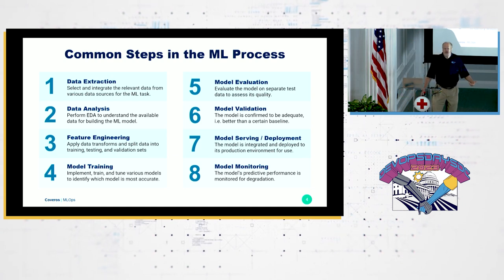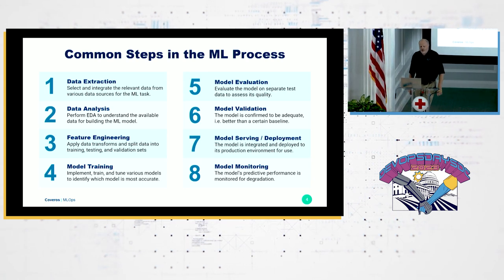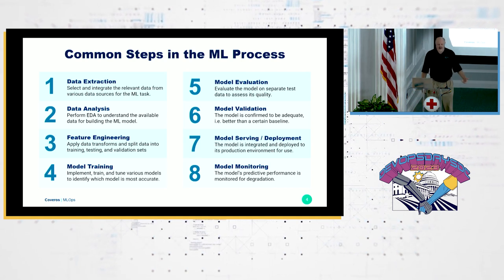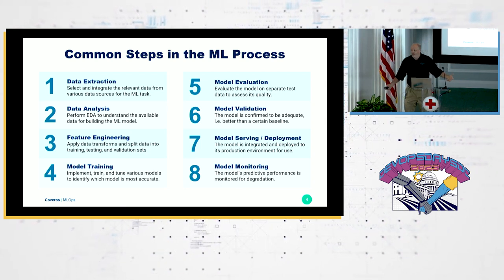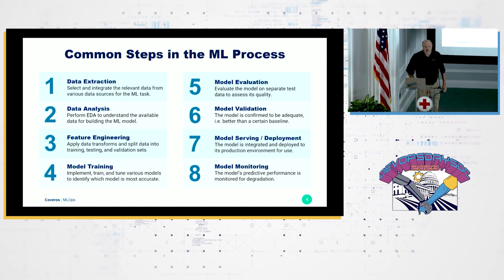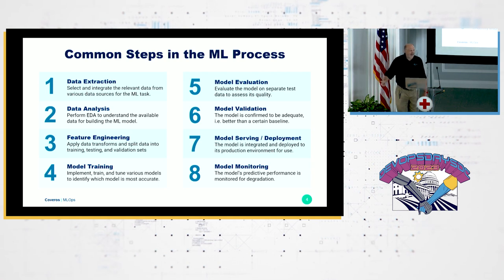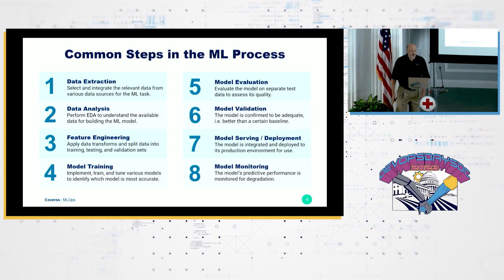Step two is that data is usually not in a form you can use. It doesn't fit what your model is expecting. So you're going to have to do some data analysis on it. A popular approach in the data science community is exploratory data analysis — really to understand the data and figure out what aspects are relevant to your problem space. After that, you want to engineer features, which means figuring out how to put the data in the format your models can read and use as input to train against, and to leverage in production.